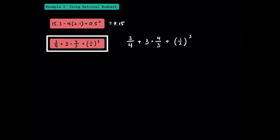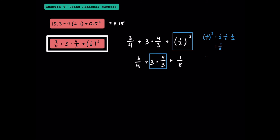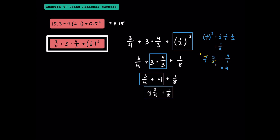Here's one last problem dealing with fractions. Our first step is going to be evaluating 1/2 to the third power. 1/2 cubed is equal to 1/2 times 1/2 times 1/2, giving us 1 in the numerator and 8 in the denominator. From here, we're going to multiply 3 times 4/3. Since 3 is the same thing as 3 over 1, and multiplying by 4/3, we can cross-cancel the 3s to make 1 and 1. Multiplying the numerators together we get 4, and the denominators we get 1, which simplifies down to just 4 wholes. Going from left to right, we can add 3/4 plus 4 to get 4 and 3/4. To add the remaining fractions together, we need a common denominator. The LCD is 8, so we can write 4 and 6/8 plus 1/8. Added together, this is going to be 4 and 7/8. That is our final answer.